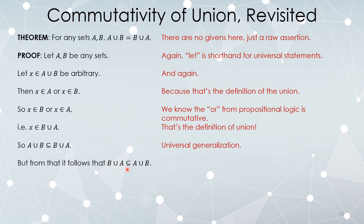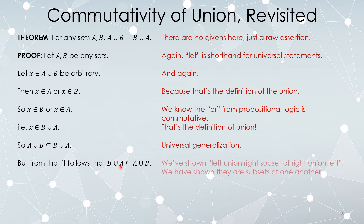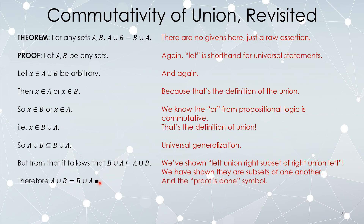From this, the other containment follows as well. We already proved: for any sets, left ∪ right ⊆ right ∪ left. Since it's universally quantified, if we perform a substitution swapping A and B, we get B ∪ A ⊆ A ∪ B. Now we have exactly the two containments needed to show set equality. And the proof is complete.